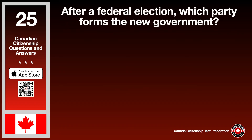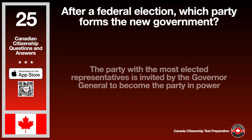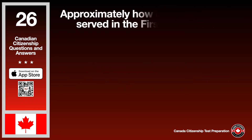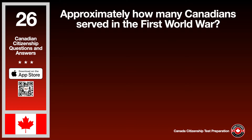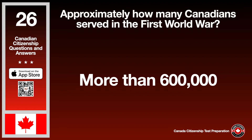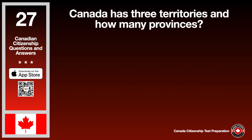After a federal election, which party forms the new government? The answer is the party with the most elected representatives is invited by the Governor General to become the party in power. Approximately how many Canadians served in the First World War? The answer is more than 600,000. Canada has three territories and how many provinces? The answer is 10.